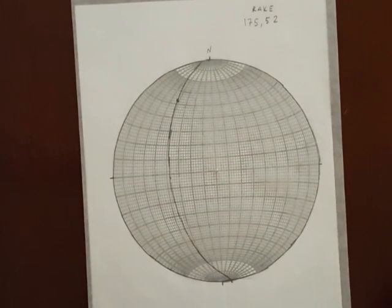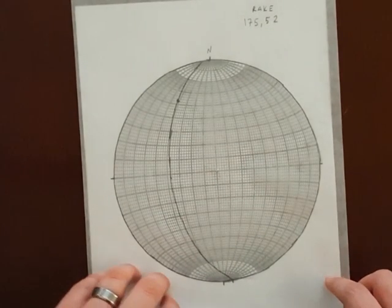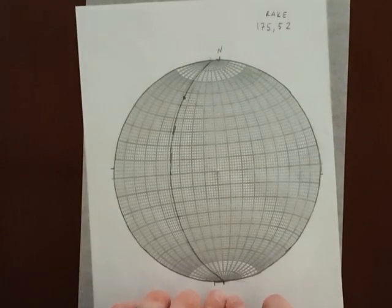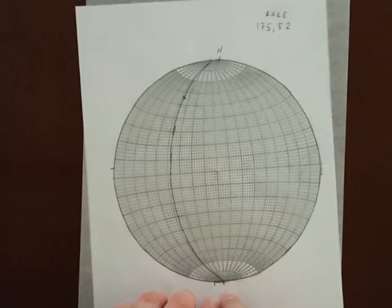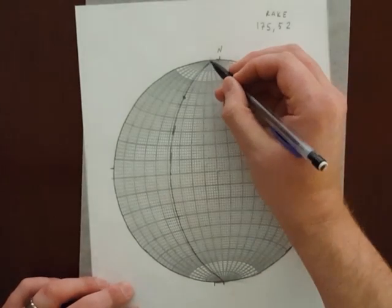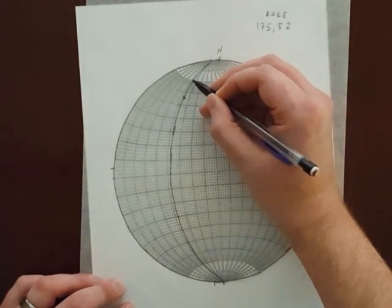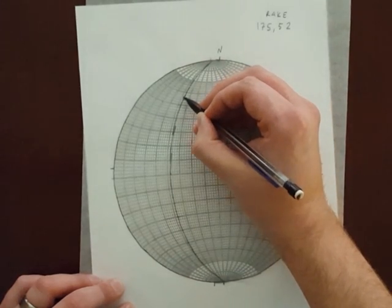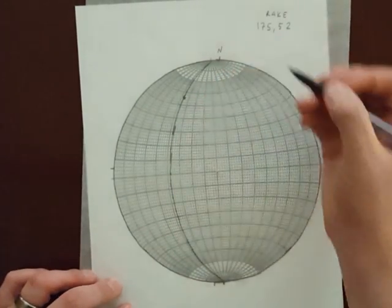So to measure a rake, I'm just going to move my plane so its strike is at the north and south poles, and I can just count from strike: 10, 20, 30, 32, 34 degrees to my rake.